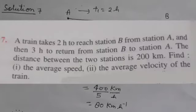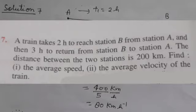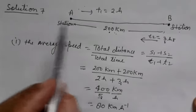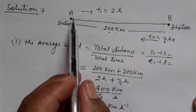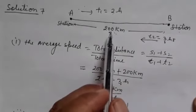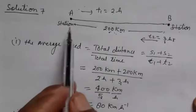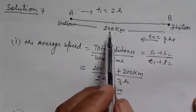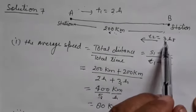Question number 7: A train takes 2 hours to reach station B from station A, and then 3 hours to return from station B to station A. The distance between the two stations is 200 km. Find the average speed and average velocity of the train. For the solution, time from A to B is 2 hours and distance is 200 km. Return distance is the same 200 km, but the time is 3 hours.